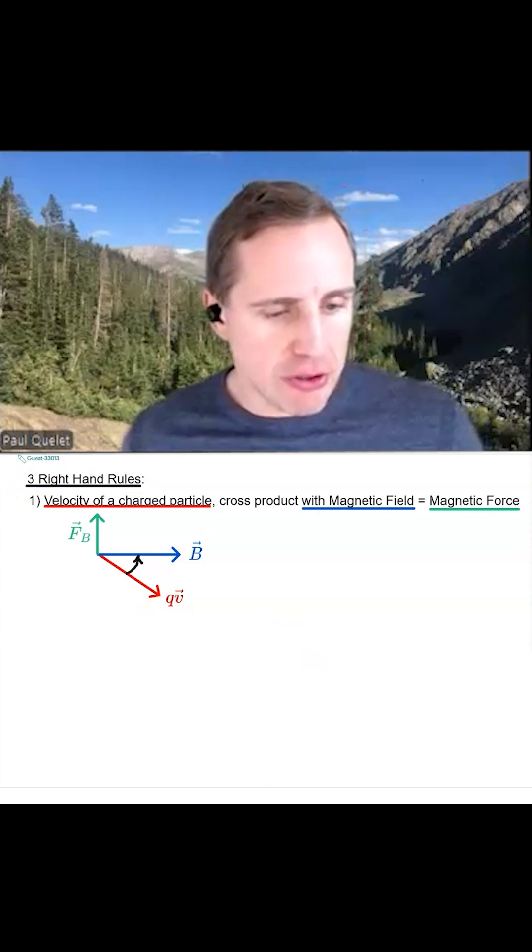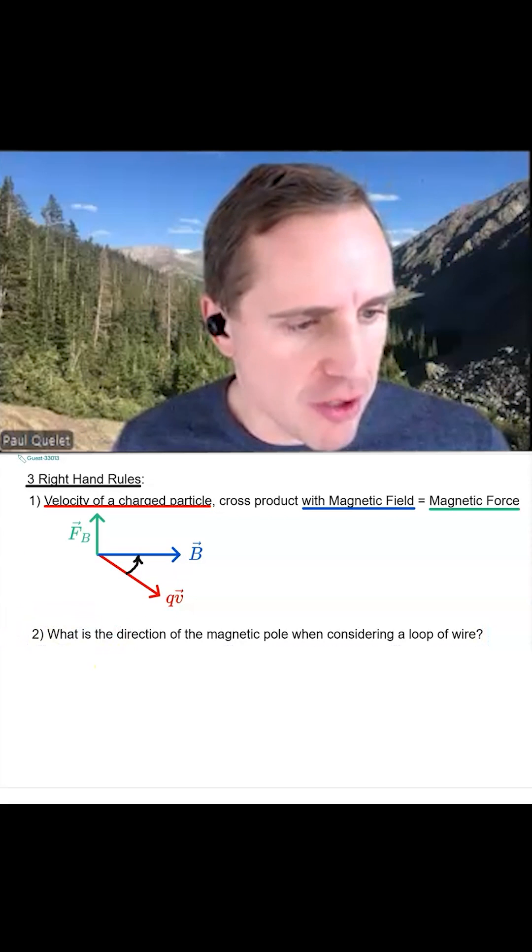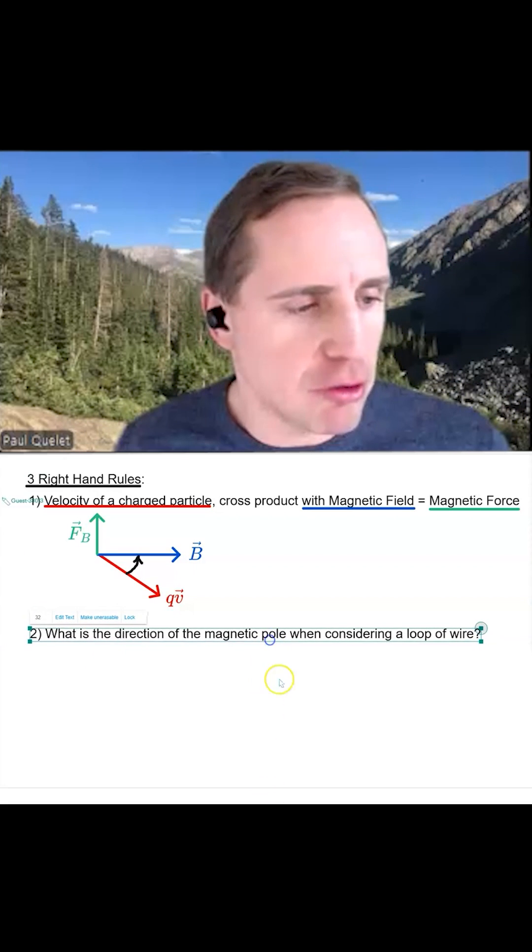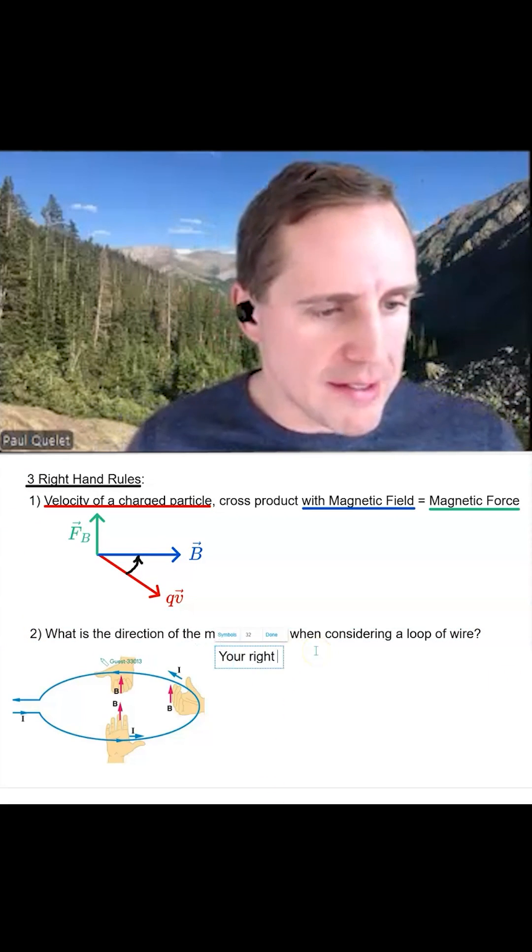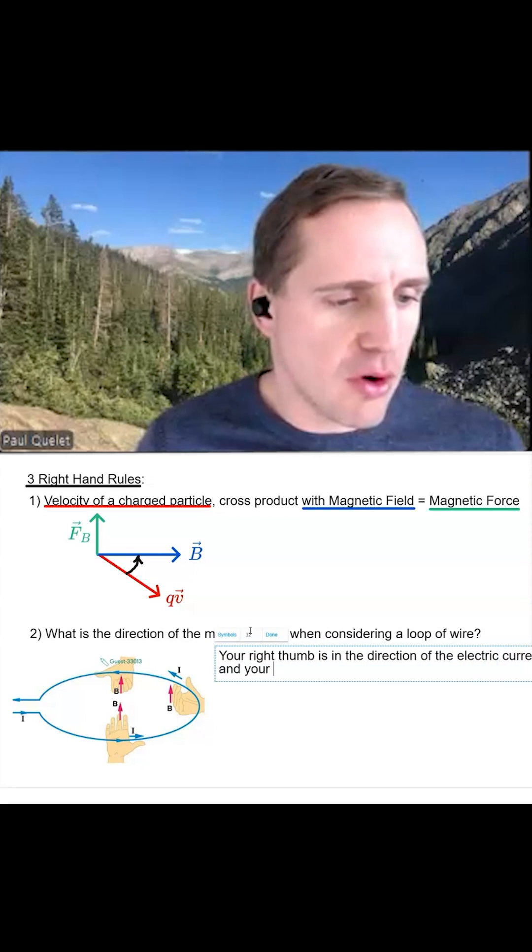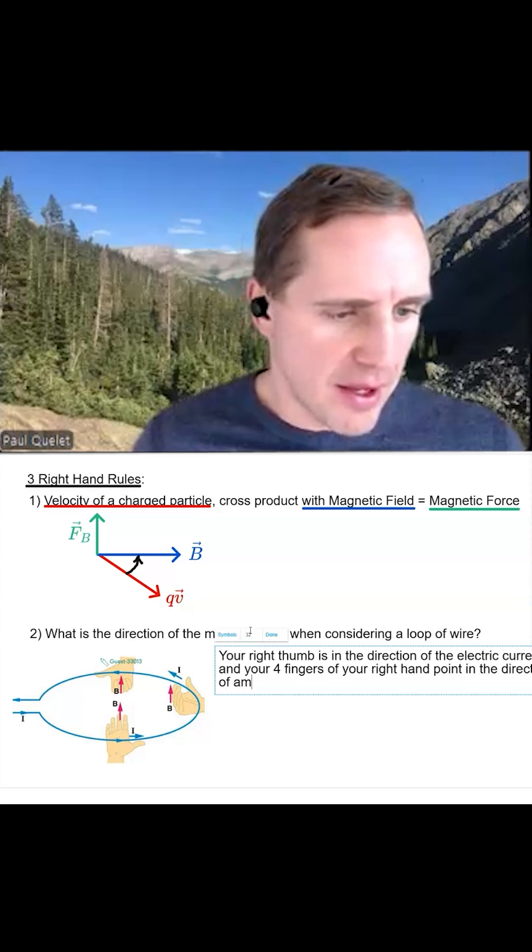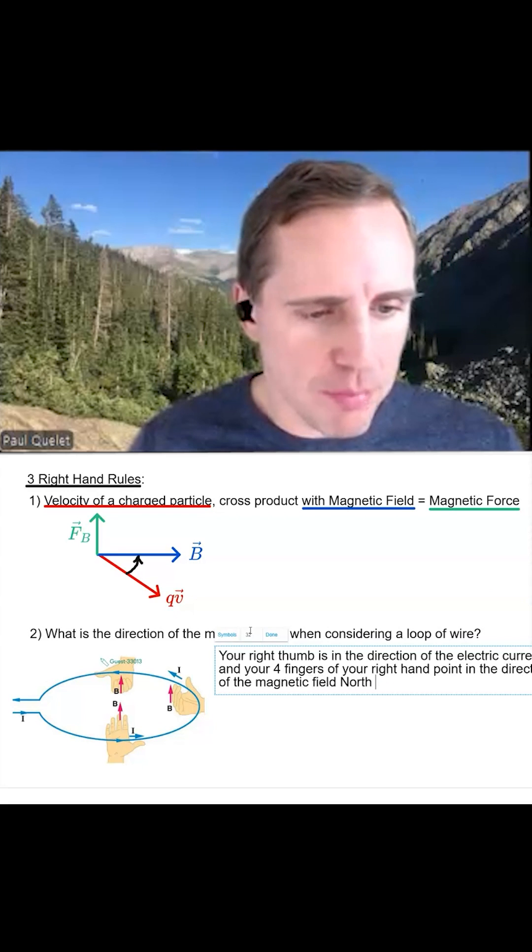Right-hand rule two is asking the following question: What is the direction of the magnetic pole when considering a loop of wire? Your right thumb is in the direction of the electric current and your four fingers of your right hand point in the direction of the magnetic field north pole.